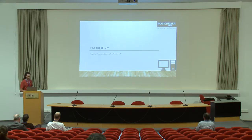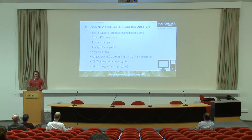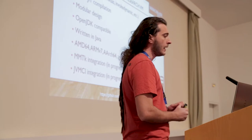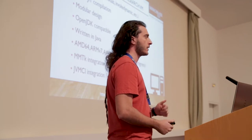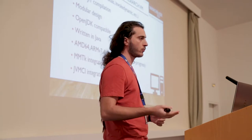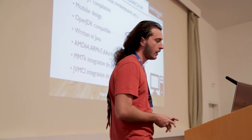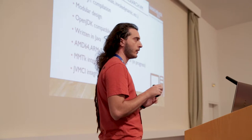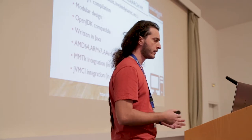First, we will talk about Maxine VM. Maxine VM is a state-of-the-art virtual machine. It currently supports Java 8, including Lambdas and the InvokeDynamic bytecode. It has two-tier just-in-time compilation — a fast compiler that produces lower-quality optimizations, and a slower compiler that produces higher-quality optimizations and thus faster code. It has a modular design that allows us to experiment with different algorithms for different parts of the JVM, such as different garbage collectors and different compilers.